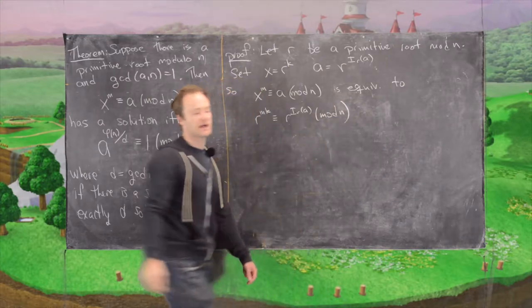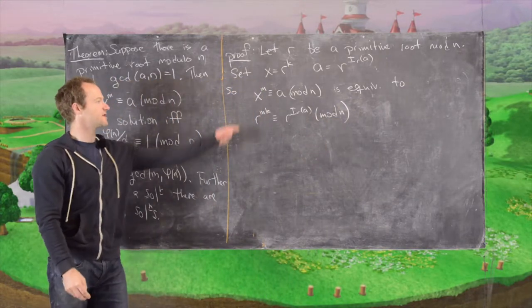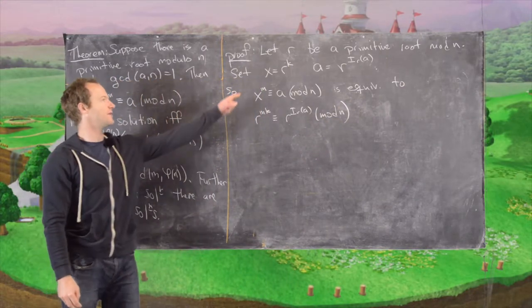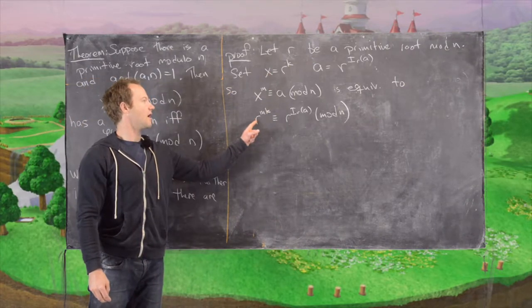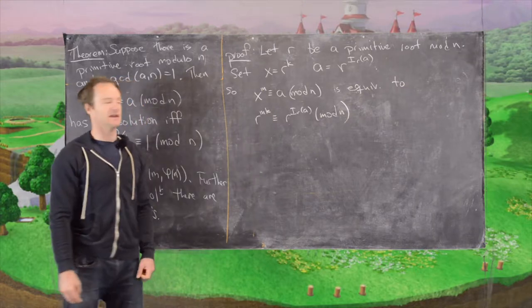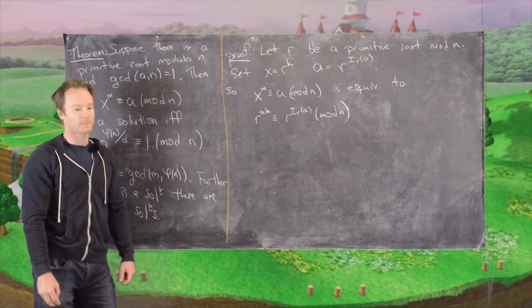I've just rewritten these with some aliases. If x is r to the k, then x to the m is r to the mk, and so on.